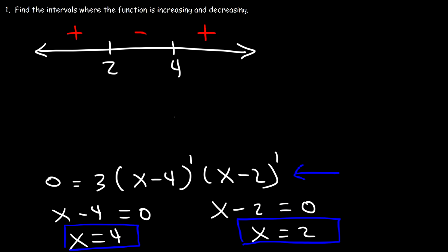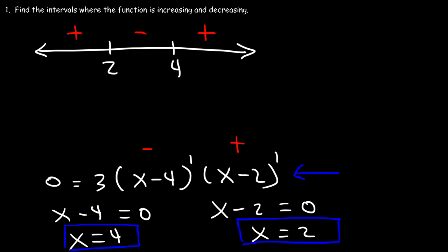Let's verify by trying 3: 3 minus 4 is negative, 3 minus 2 is positive, so a negative times a positive gives a negative result. And trying 0: 0 minus 4 is negative, 0 minus 2 is negative, and a negative times a negative is positive.